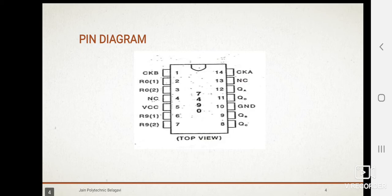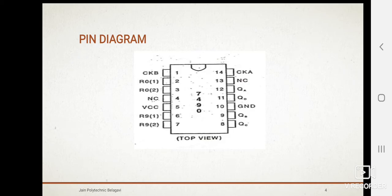This is the pin diagram of IC7490. This IC consists of 14 pins. R1 and R2 are the set and reset pins, and pin number 1 is the input. We are connecting it to the monopulse clock, or we can short it to pin number 12 and 14 to monopulse clock.